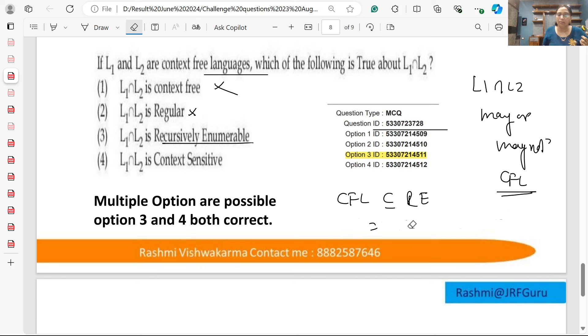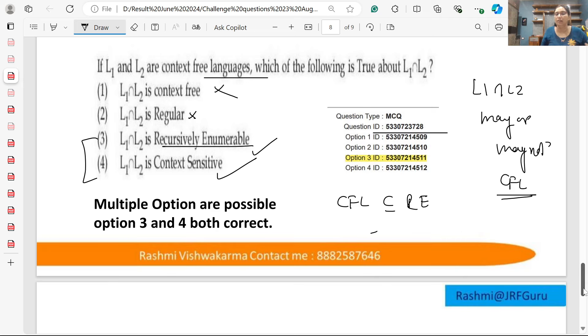Definitely CFL will be CFL, context-sensitive, and recursively enumerable. So options 3 and 4 both can be the answer. In this case, it may be that those who have the correct answer get marks, which is a benefit.